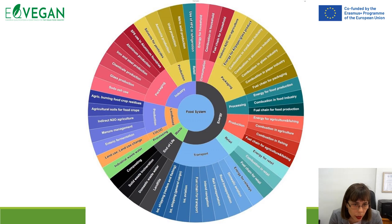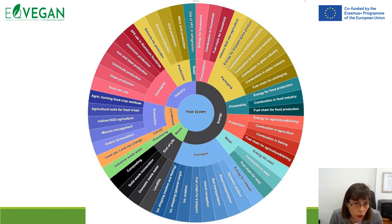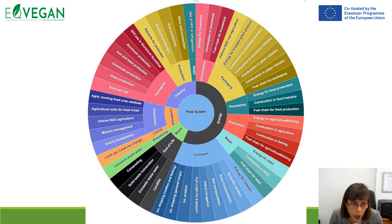Regarding food systems, we need to think about land-based production of raw materials, industry, energy consumption and waste. Different areas in food production include production, packaging, retail, consumption, processing, transport and end of life. At each step, we need to think about how to reduce land usage, energy consumption, and food waste.